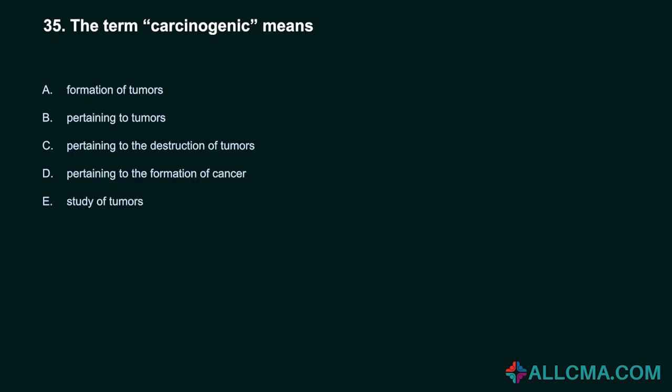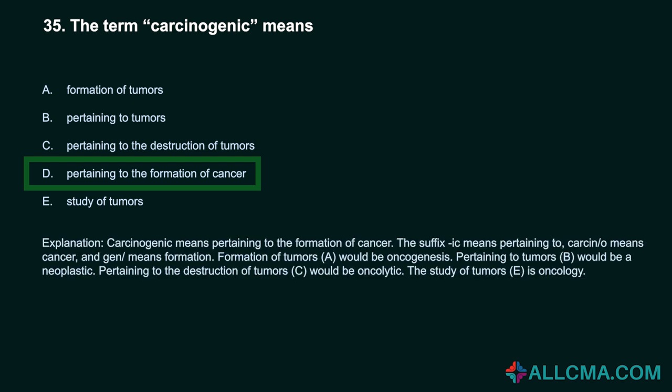Question 35: The term carcinogenic means: A. Formation of tumors. B. Pertaining to tumors. C. Pertaining to the destruction of tumors. D. Pertaining to the formation of cancer. E. Study of tumors. Correct answer: D. Pertaining to the formation of cancer. The suffix -ic means pertaining to. Carcin/o means cancer and -gen means formation. Formation of tumors would be oncogenesis. Pertaining to tumors would be neoplastic. Pertaining to the destruction of tumors would be oncolytic. The study of tumors is oncology.